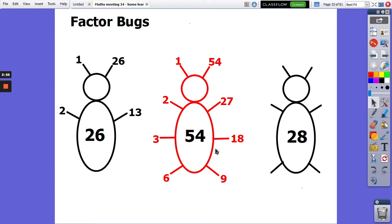Okay, 28 now. As always, 28 has got 1 and 28, 2 and 14, 4 and 7. Well done if you've got all those factors for all three of those numbers.